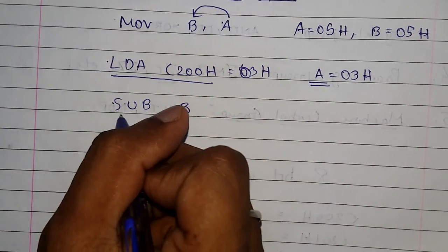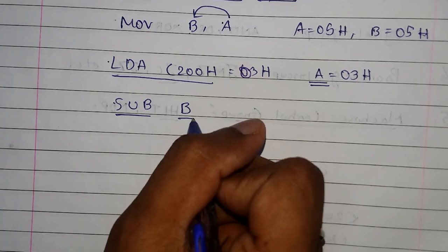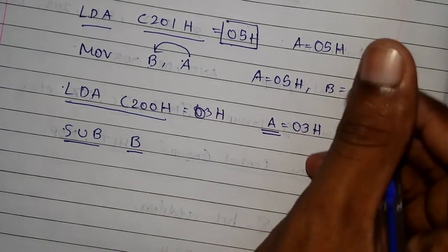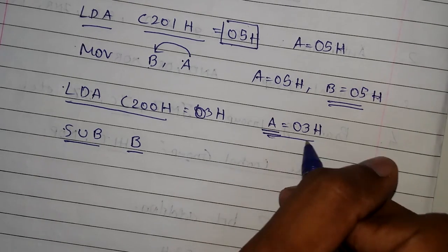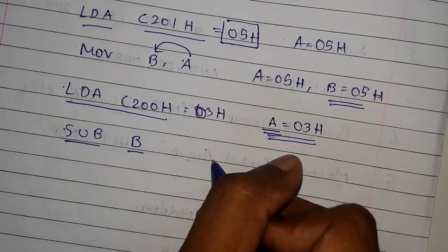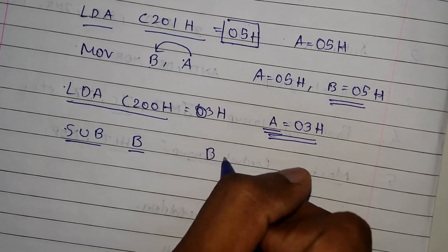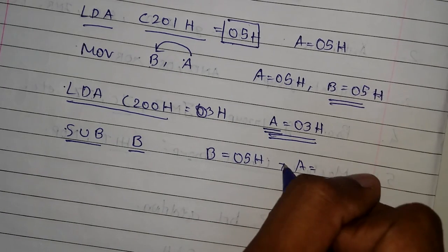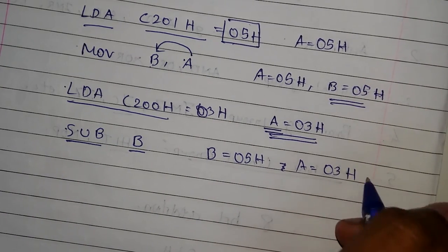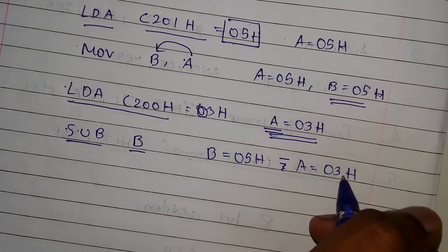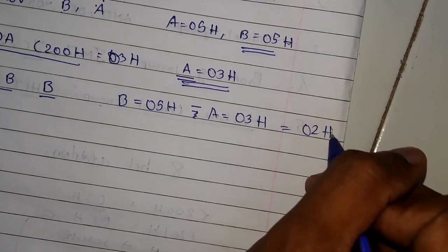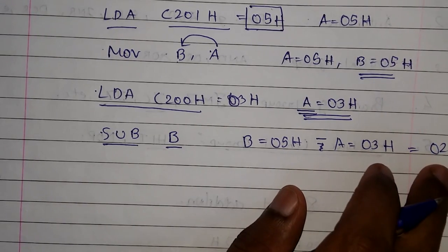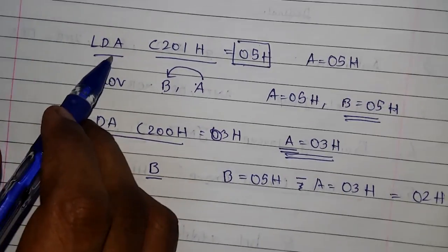Now let's execute the main instruction: SUB B — Subtract from B. This subtracts the data in B from the data in A. We have 05H in B and 03H in the accumulator, so this will be subtracted and we will get the answer as 02H.